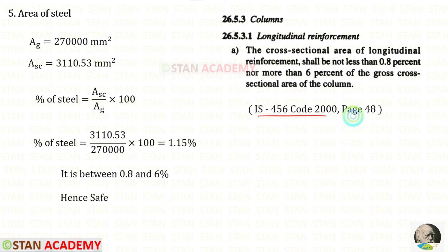After simplifying for AC we will get 3110.53 mm square. Now let us open this book page number 48. This clause states that the cross sectional area of longitudinal reinforcement shall be not less than 0.8% and not more than 6% of the gross cross sectional area. Let us check the percentage of steel which is equal to ASC upon AG into 100. When we do that we will get 1.15% and it comes between 0.8 and 6. So it is safe.